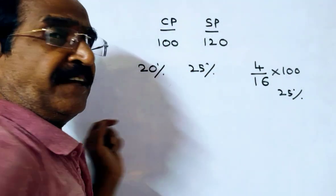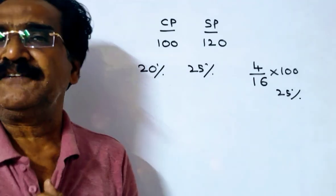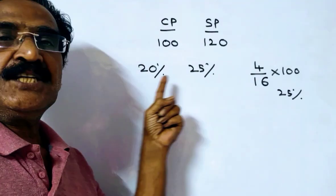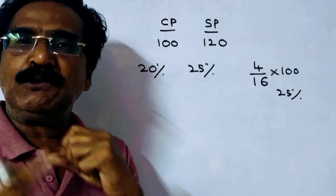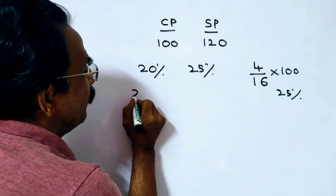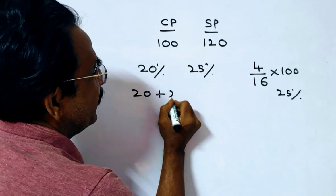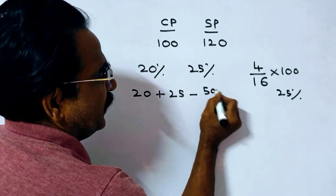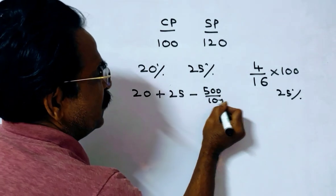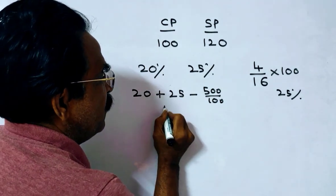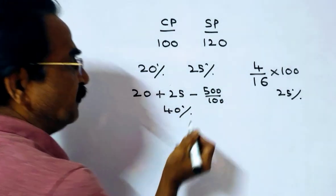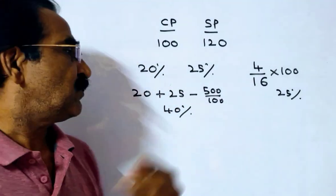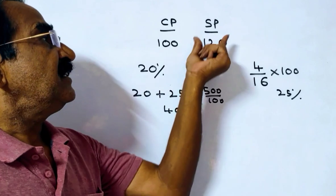He is offering 20% and 25%, two types of successive discounts. These two successive discounts are equal to a single discount of 20 plus 25 minus 20 into 25 by 100. So 45 minus 5 equals 40%. These two successive discounts equal a single discount of 40%.